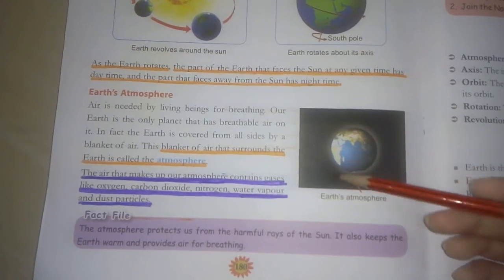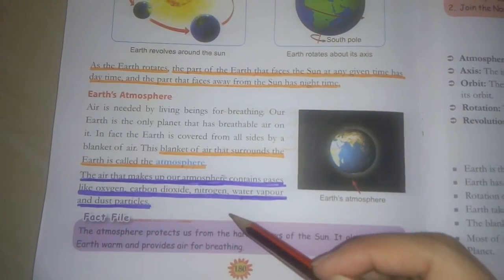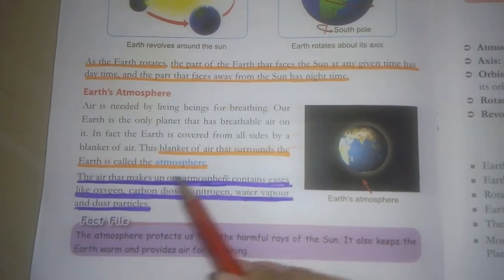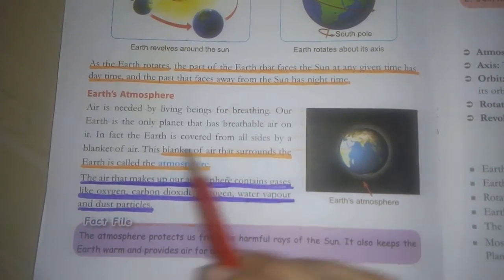What gases are present in the air, in our atmosphere? First is oxygen, carbon dioxide, nitrogen, water vapor and dust particles.